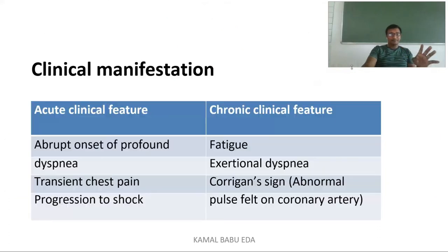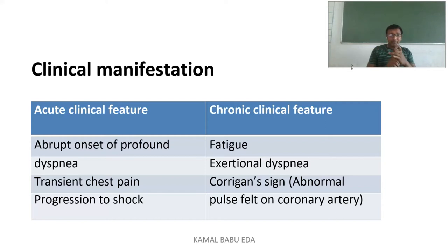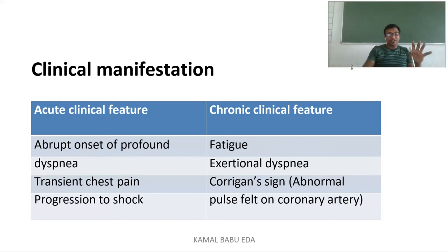Clinical manifestations include acute and chronic features. In acute features: sudden dyspnea, transient chest pain, and progression to shock. In chronic features: fatigue, exertional dyspnea, and Corrigan's sign — which is an abnormal pulse felt on the carotid artery due to the wide pulse pressure in aortic regurgitation.